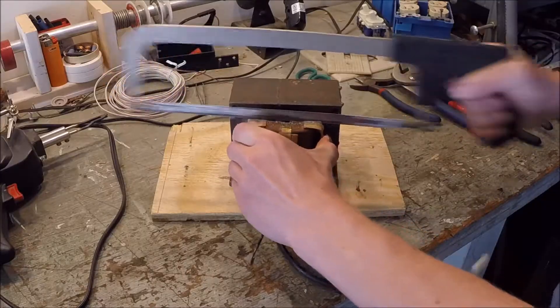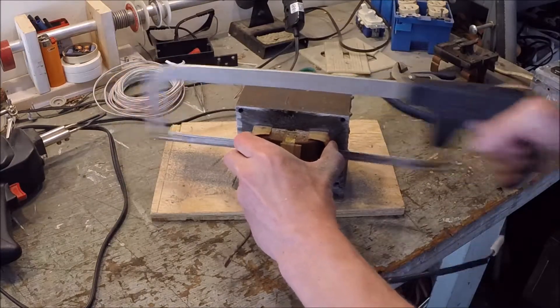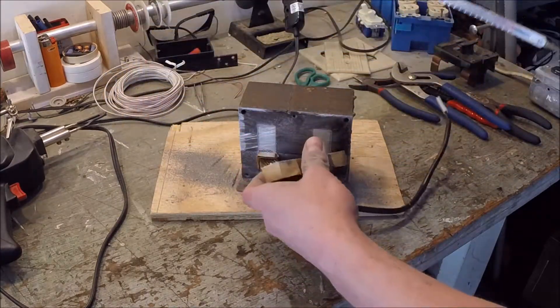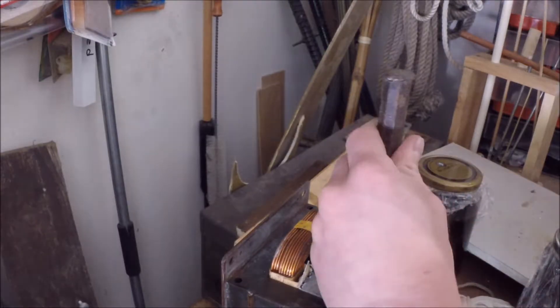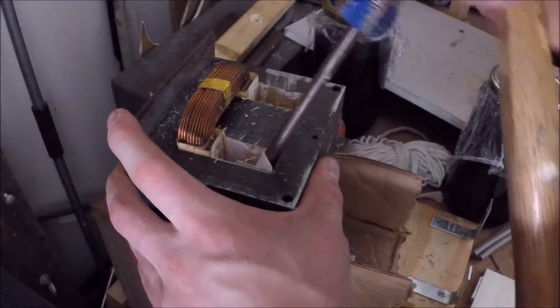I began by cutting through the high voltage coil as well as the small low voltage coil beneath it using a hacksaw. I removed the remaining wire with a hammer and punch and removed the paper lining as well.